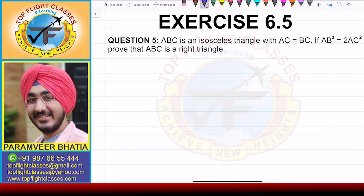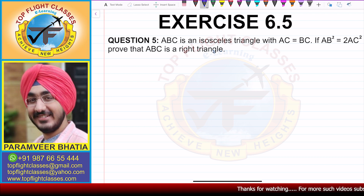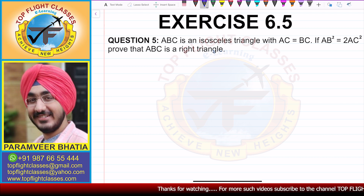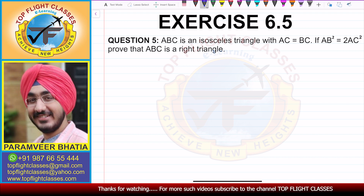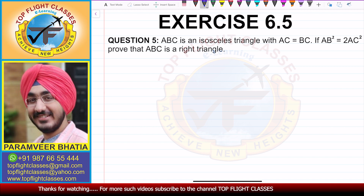In this video, we are going to solve question number 5 of exercise 6.5. Question number 5 says ABC is an isosceles triangle with AC equal to BC. If AB square is equal to 2AC square, we have to prove that ABC is a right triangle.